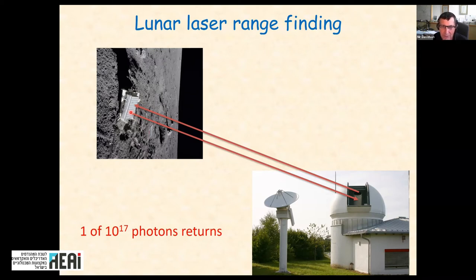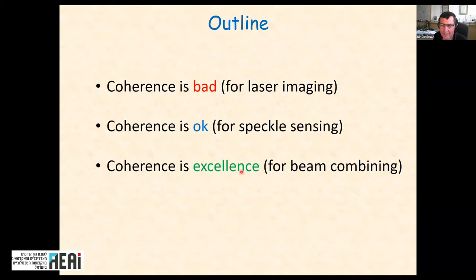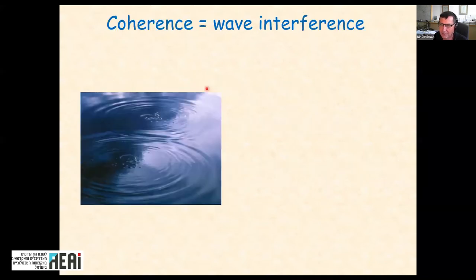This long introduction is meant to convince you that coherence — uniform, well-defined phase, or parallel rays — is a very important property common to many applications. What I am going to show you is that sometimes this coherence is bad because it generates speckles, sometimes it is okay because we can use those speckles to sense things, and sometimes coherence is excellent because you can combine many independent lasers into a single beam.